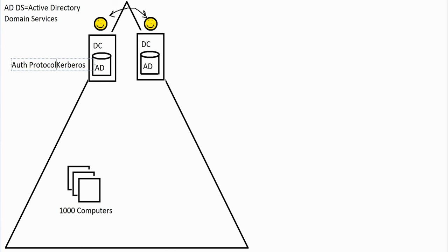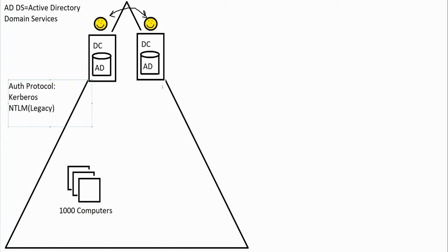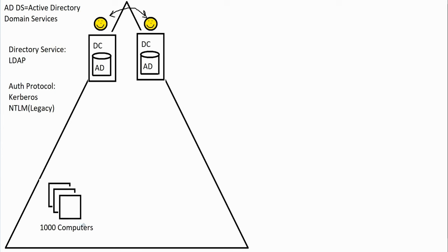A protocol is essentially a language. There was also an older protocol called NTLM, which was for legacy machines prior to the year 2000. That protocol allowed us to have encrypted passwords and authenticate securely. Active Directory also uses a language known as the directory service language called LDAP — Lightweight Directory Access Protocol. These are all decades old at this point, but they still work and are still pretty secure.